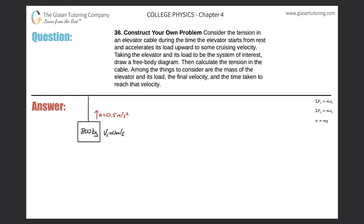Problem 36: Construct your own problem. Consider the tension in an elevator cable during the time the elevator starts from rest and accelerates its load upward to some cruising velocity. Taking the elevator and its load to be the system of interest, draw a free body diagram, then calculate the tension in the cable. Among the things to consider: the mass of the elevator and its load, final velocity, and time taken to reach that velocity.